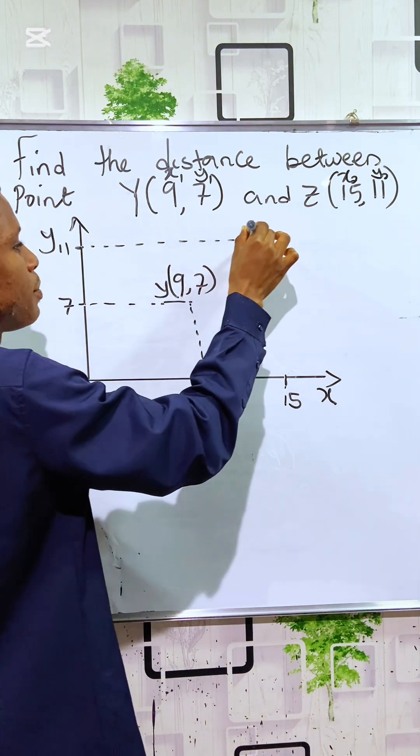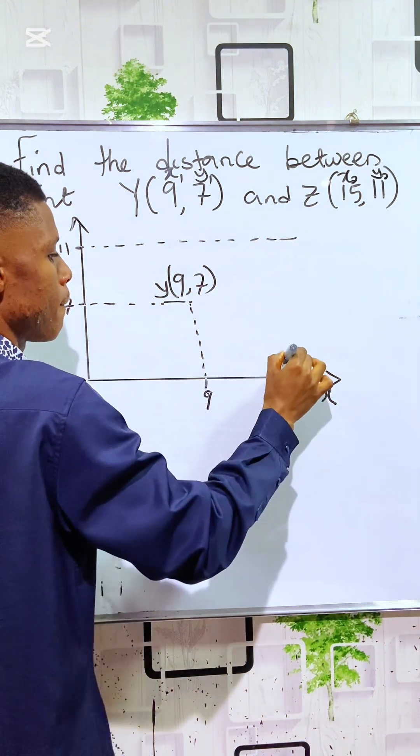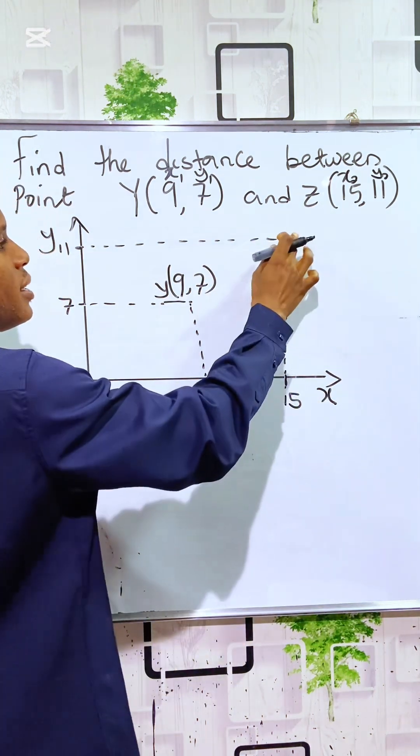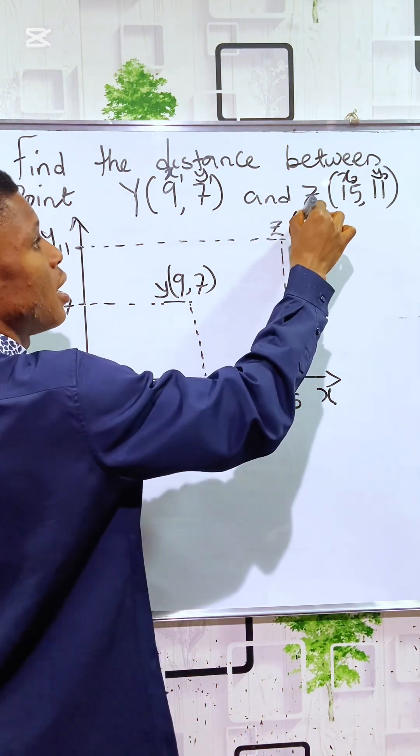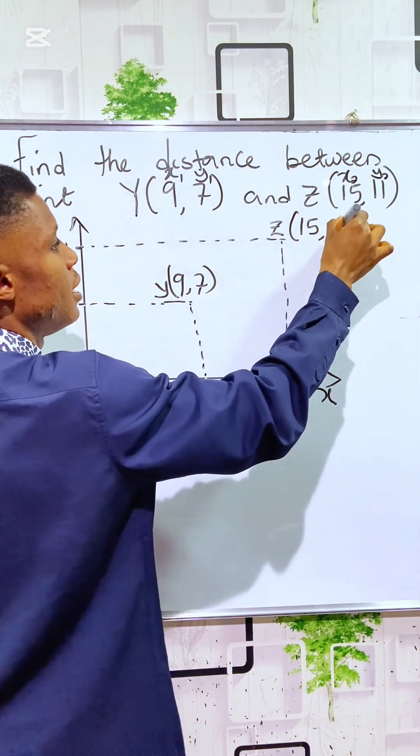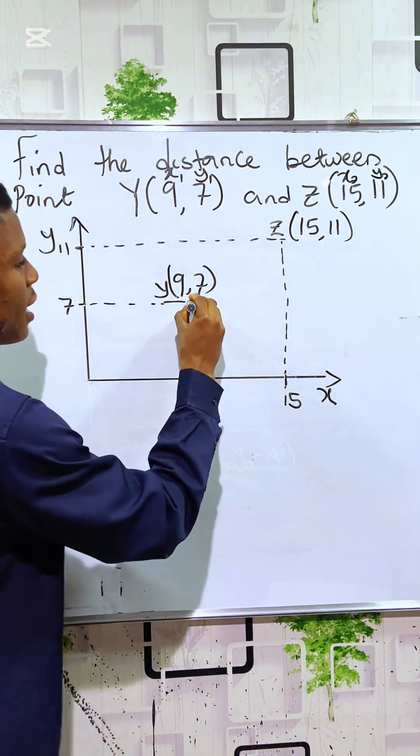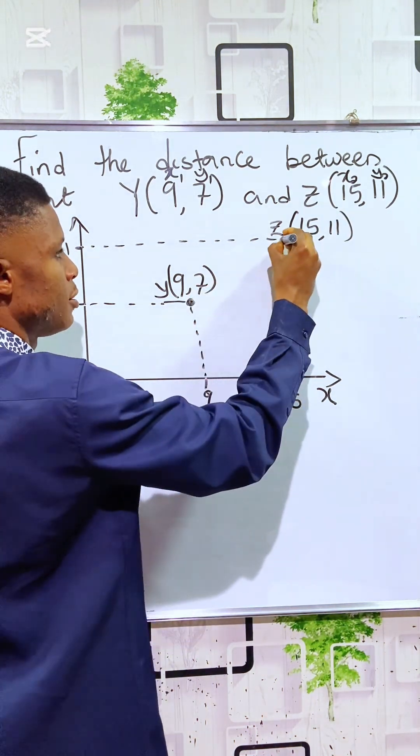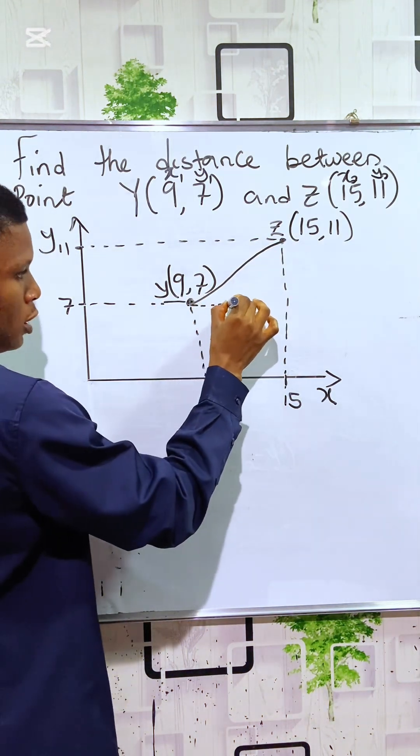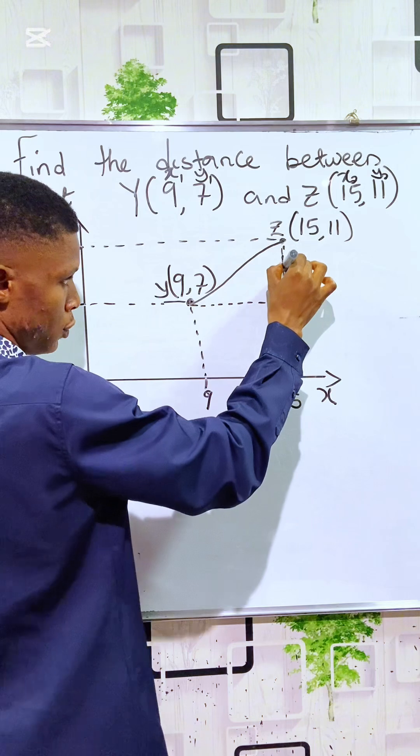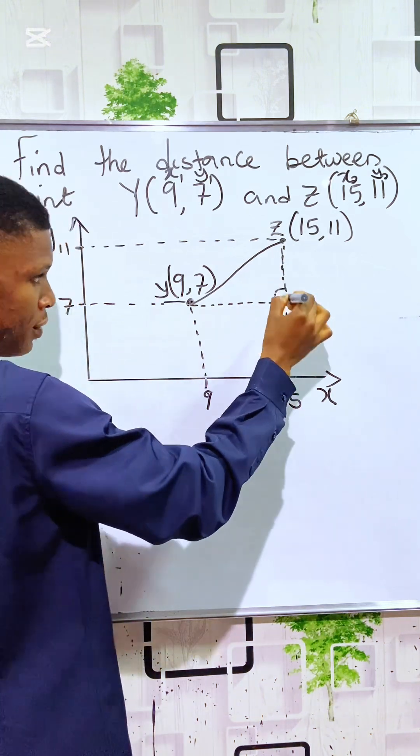So let's locate point Z. Point Z can be located here. This is Z, which is 15, 11. So to find the distance between this point and this point here, you can now see that we can actually work out a right-angled triangle at this point.